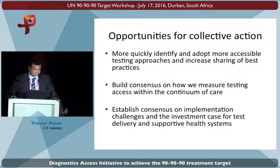These are implementation challenges we really need to think about resolving. This slide shows that right now most test results for infant diagnosis arrive after the early peak of mortality in the first few months of life. Opportunities for collective action here include: identifying and building consensus around smart testing or best practice approaches to implementation, and sharing these widely so we're not inventing the wheel in every setting. We need consensus around how we measure testing linked to the continuum of care and patient impact, and on the investment case for diagnostic delivery so appropriate resources can come behind this.